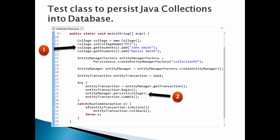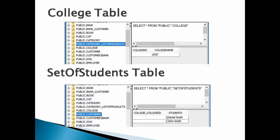For the rest of the code working in this slide, you can refer to my previous tutorials on JPA. Let's check the database for the college table and set of students and run a select query on it, as shown in the figure. The image in the slide displays a single row for the college entity having college ID and college name columns. The set of students table has college_college_ID as a foreign key, which maps to college ID in the college table, and a students column which holds the values of the set of students.